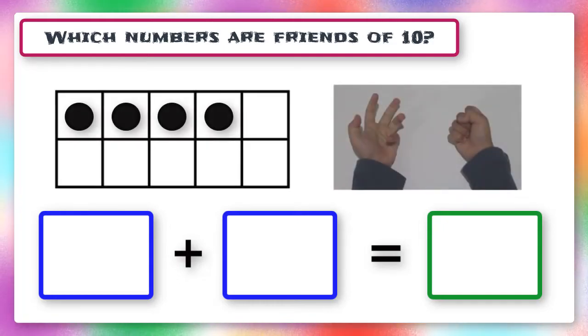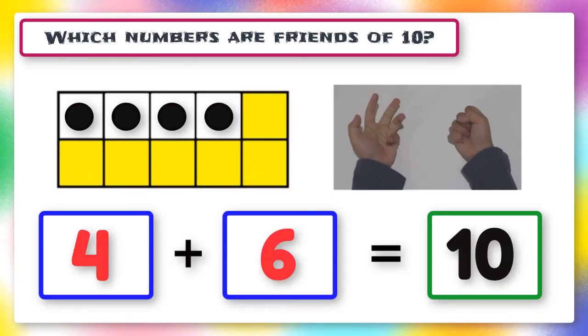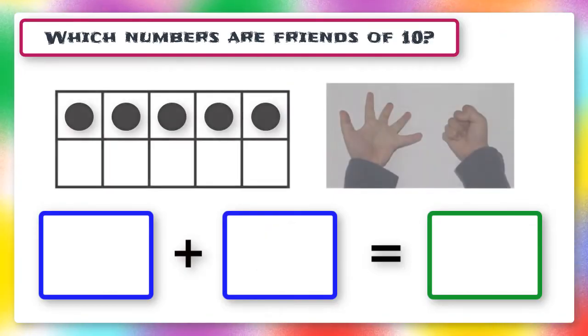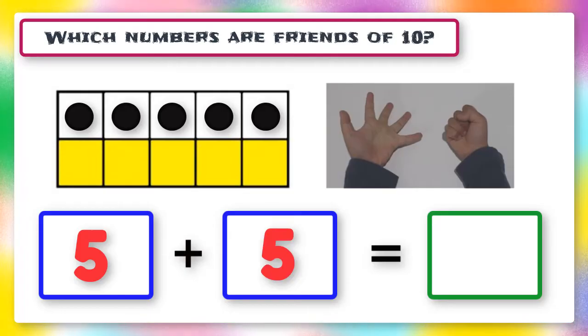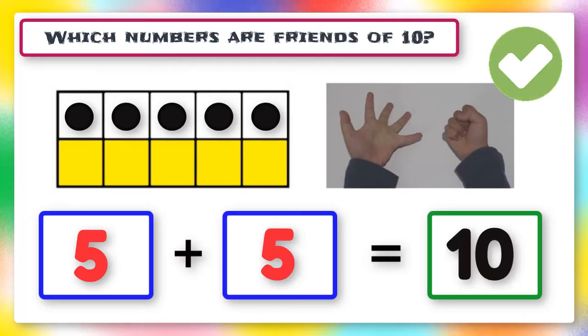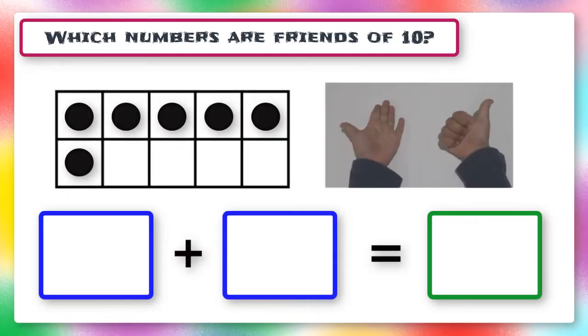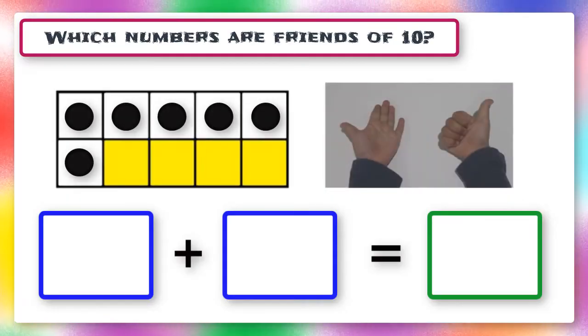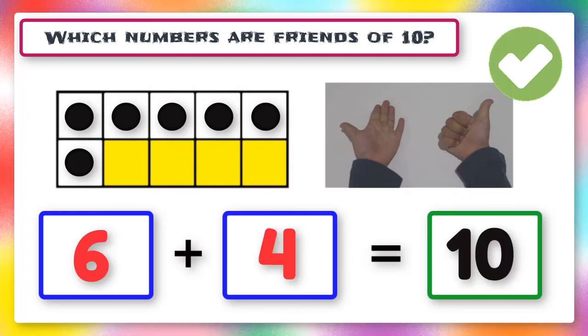Here's the next question. 4 and what are friends of 10? 4 and 6 are friends of 10. Good work! 5 and what are friends of 10? 5 and 5 are friends of 10. Keep up the good work. 6 and 4 are friends of 10. Perfect.